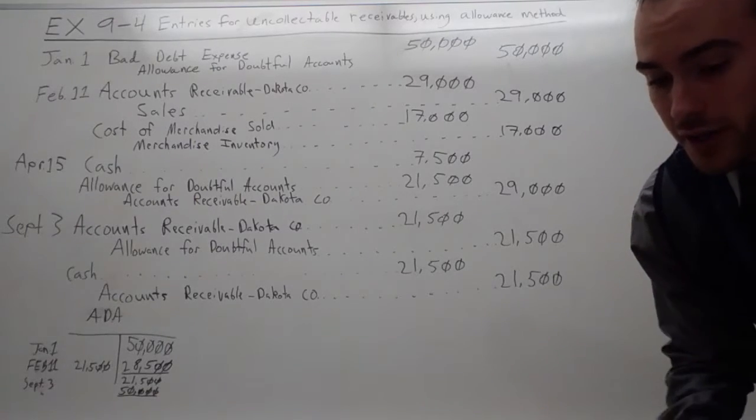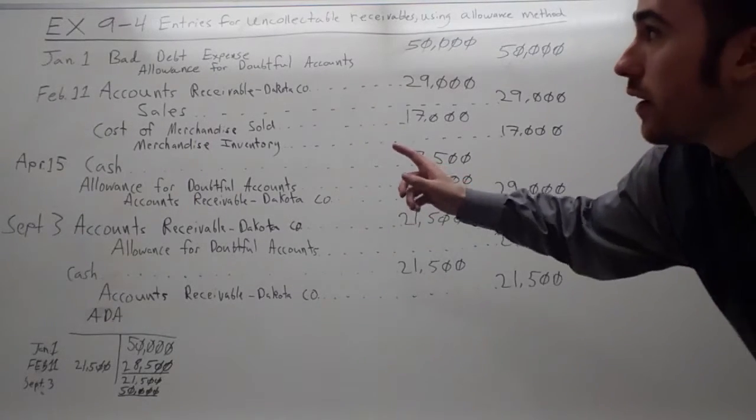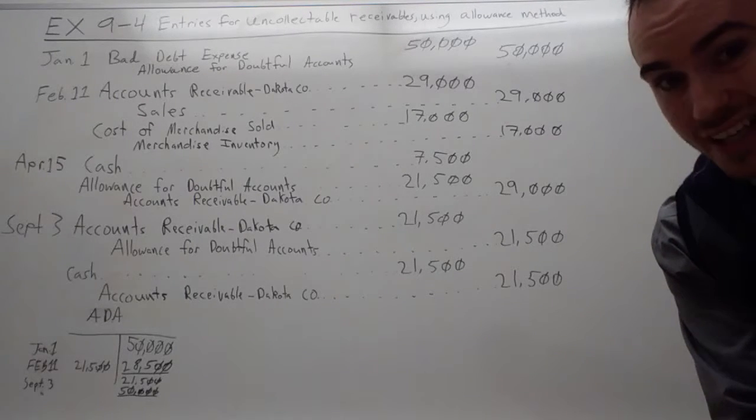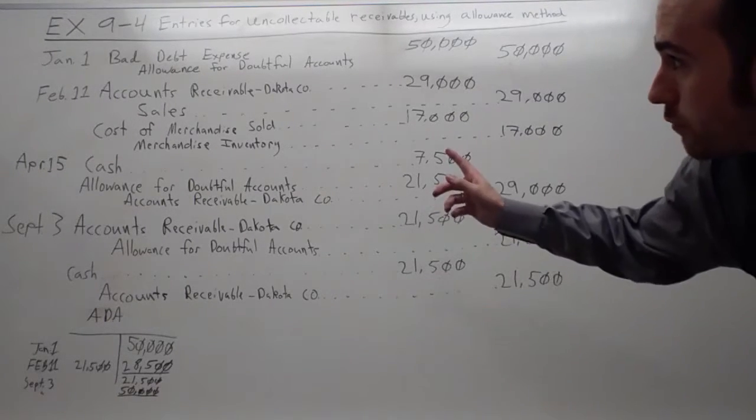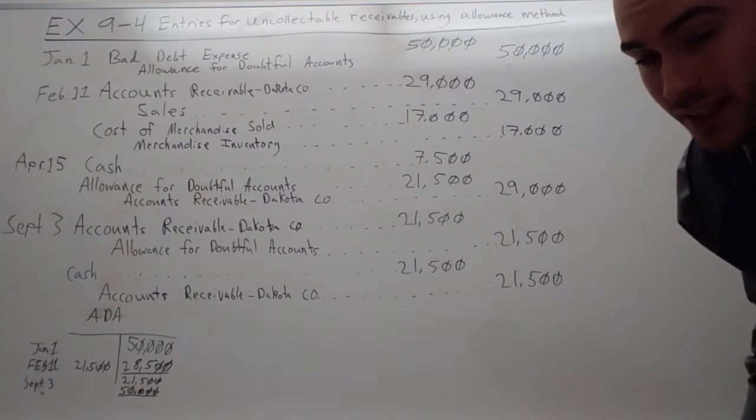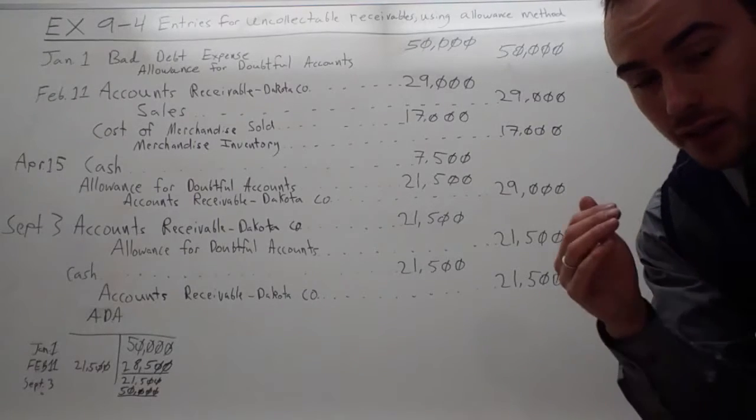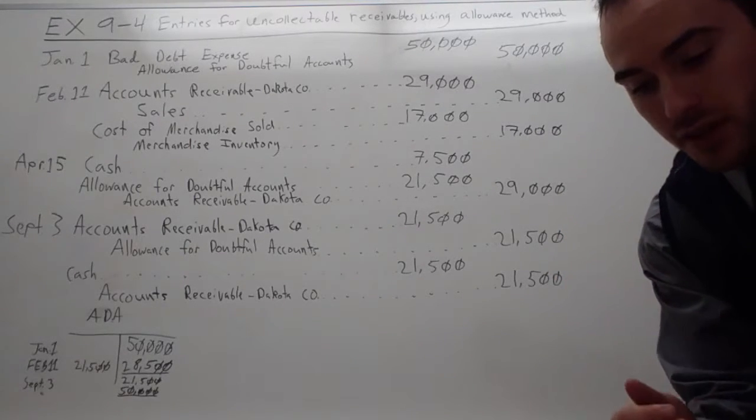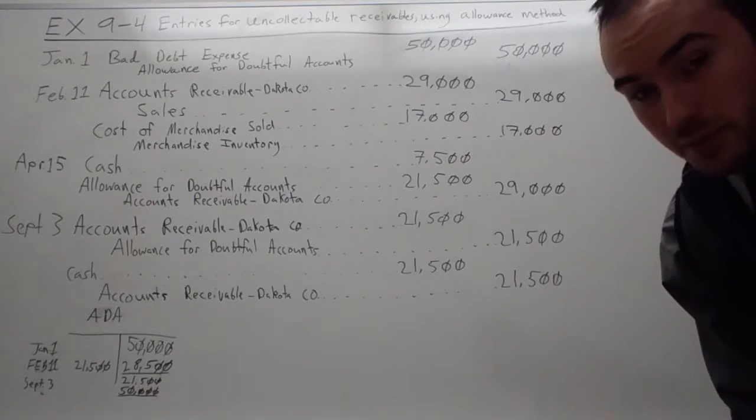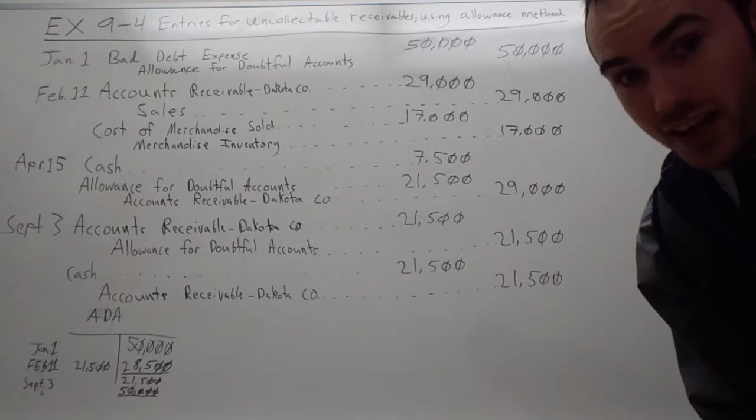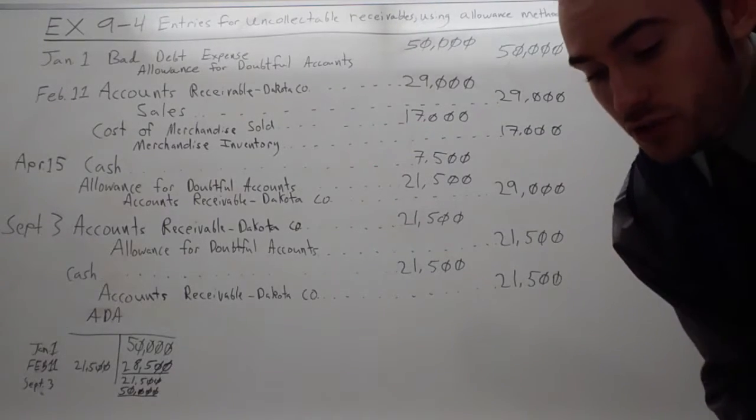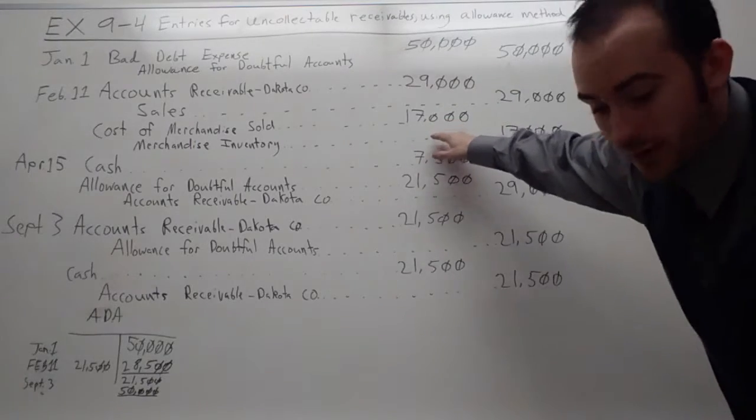And then we'll start off right here for February 11th. Accounts Receivable, Dakota Company bought supplies on account for $29,000. So we debit Accounts Receivable Dakota Company $29,000 and we credit Sales. Once again, when you sell something on a receivable, it still ups your income. That's why a lot of companies do it. It makes you look better. And then, of course, along with that, cost of merchandise sold was $17,400. So we take that off.